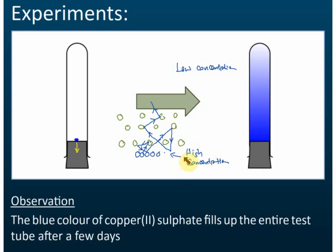There's a question from the chat: can you repeat a change in concentration? That is not a change of concentration — that is diffusion. The one thing you need to know is that particles diffuse from high concentration to low concentration. At this area the concentration of copper sulfate is high; at this area it is low, and the particle moves from high to low.